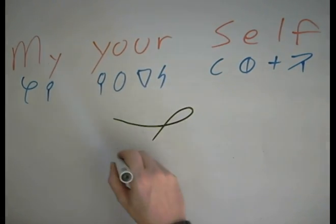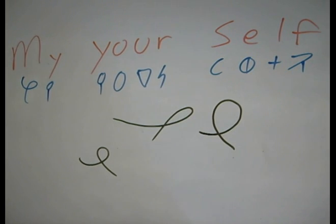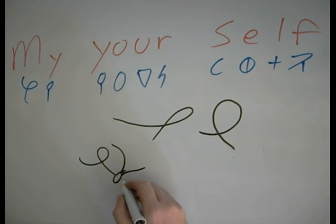You can actually, the M can be many different ways. And then the Y. The tail can be short. It can be long. It can be curved. It can be straight.